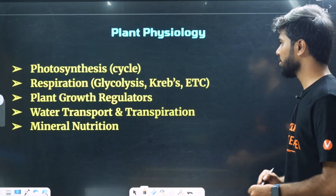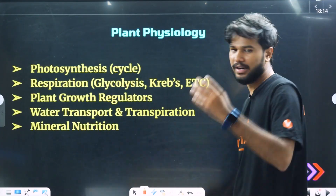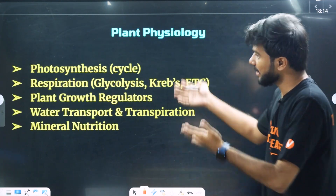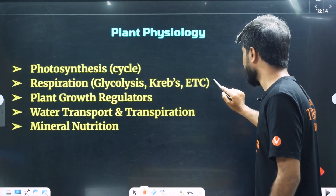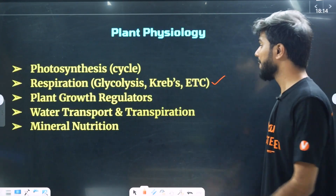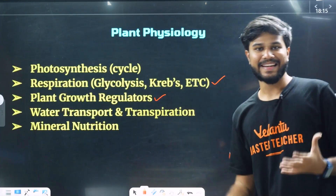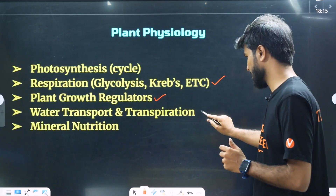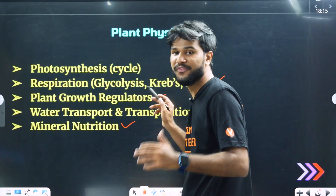Plant physiology: Photosynthesis, C4 cycle, C3 cycle. That is the respiration — Krebs cycle, electron transport chain. Plant growth, cytokinin, water transport and transpiration, mineral nutrients — plant physiology.